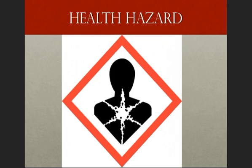The health hazard pictogram is presented on screen and represents the following chemical hazards: carcinogenicity, mutagenicity, reproductive toxicity or teratogenicity, respiratory sensitizer, target organ toxicity, or aspiration toxicity. Benzene would be a good chemical example of where we might see the health hazard pictogram used, because benzene is a known carcinogen.